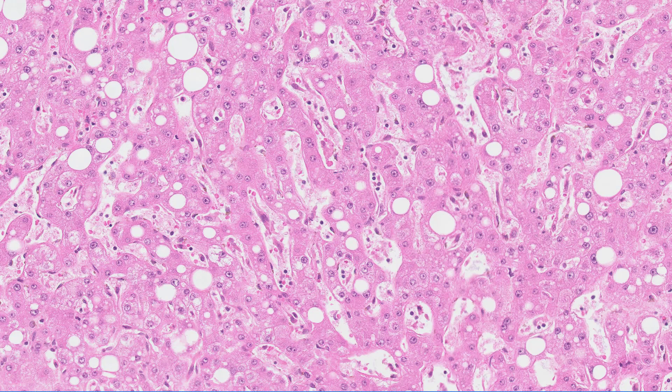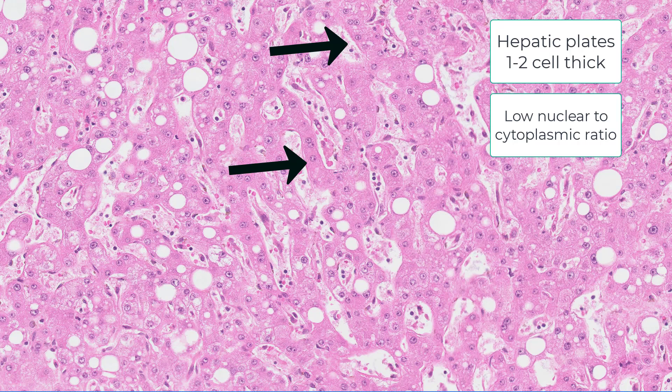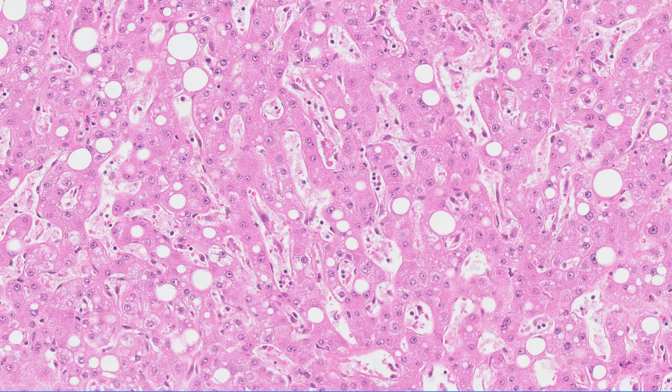I want you to pay attention to these little blue balls that are scattered all throughout the lesion. The first thing you need to decide when you see one of these lesions is: is the liver benign or is the liver malignant? There's an entirely different talk that covers benign versus malignant liver, but for the sake of this discussion, the plates are one cell thick, there's no atypia, there's a low nuclear-to-cytoplasmic ratio, and there is no mitotic activity. This is benign.